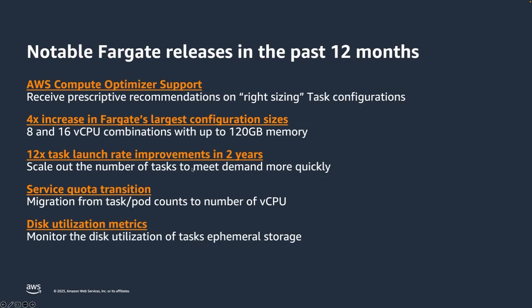Looking at notable releases from the past 12 months: first, AWS Compute Optimizer is a great tool if you are interested in managing cost and right-sizing. Compute Optimizer gives you a predictable view of how much you are spending on ECS Fargate. You can see each task and service, understand your consumption, and figure out how to downsize or increase resource amounts. It also gives you predictions and lets you drill down into past months.